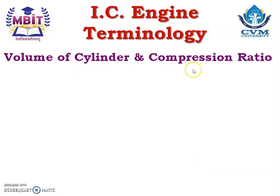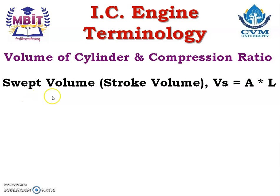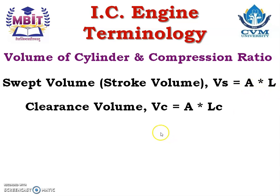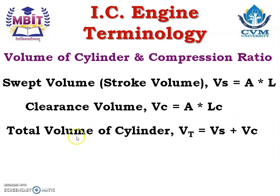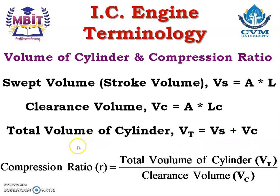Swept volume or stroke volume is denoted by the symbol Vs and can be calculated using the equation A multiplied by L — that is area of cylinder multiplied by stroke length. Clearance volume Vc equals area multiplied by clearance length. Total volume of cylinder Vt equals Vs plus Vc. And the compression ratio R equals total volume of cylinder divided by clearance volume, that is Vt by Vc.